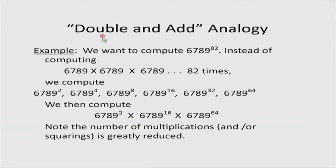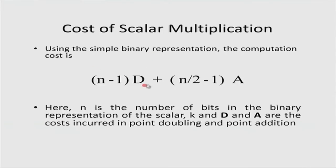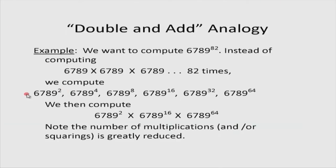In the double-and-add method for scalar multiplication, the number of doublings equals the length of the binary representation of the scalar minus 1, and the number of additions equals the Hamming weight of the scalar (the number of ones in the binary representation). On average, for a random n-bit scalar, the Hamming weight is roughly n/2. So the total cost is (n-1)·D + (n/2 - 1)·A, where D is the cost of a point doubling and A is the cost of a point addition. This is far better than naively adding P to itself k times.